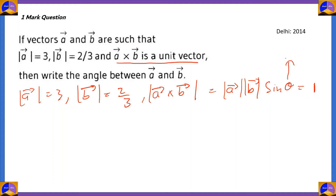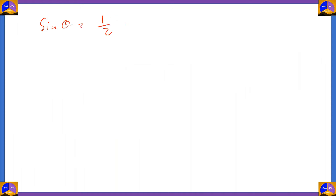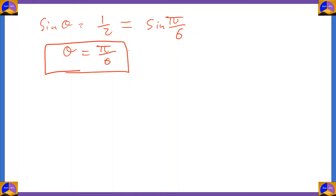The component θ is the angle between a and b. Putting in the values: 3 × (2/3) × sin θ = 1, which gives sin θ = 1/2. Since 1/2 is the value of sin(π/6), the value of θ is π/6. That's how you easily find the angle using the cross product.